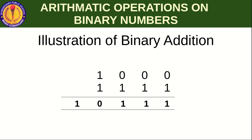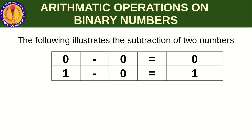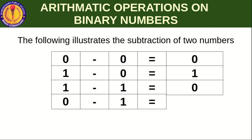Now we will learn binary subtraction. Zero minus zero is zero. One minus zero is one. One minus one is zero. For zero minus one, we can't subtract one from zero, so we have to take a borrow — just as in regular subtraction when subtracting a bigger term from a smaller term. When we take a borrow, that zero becomes 1 0.